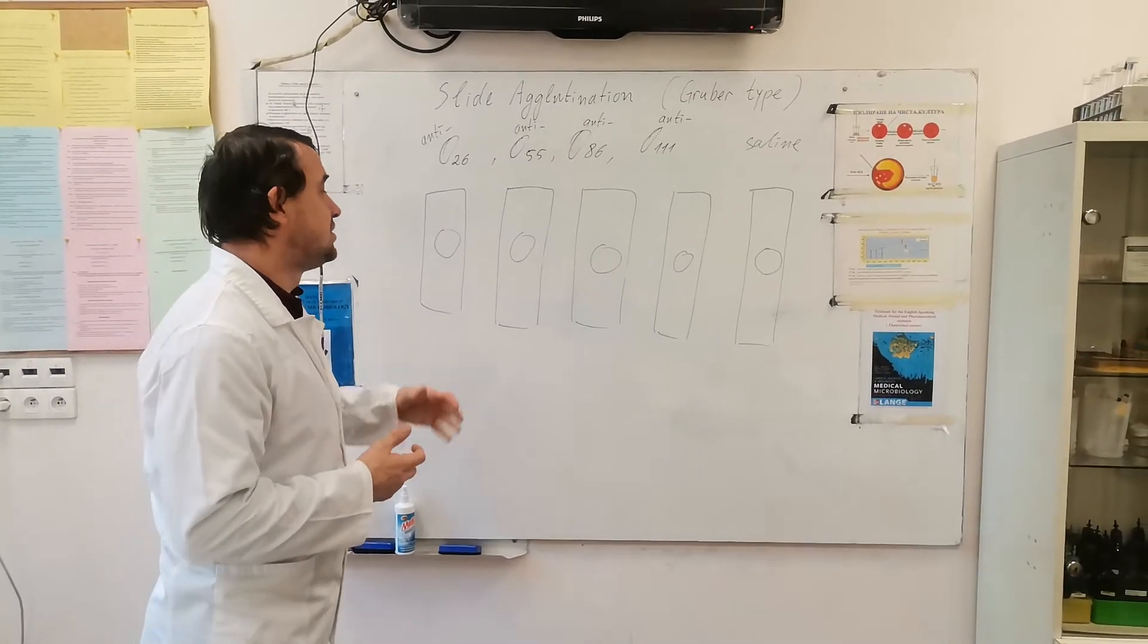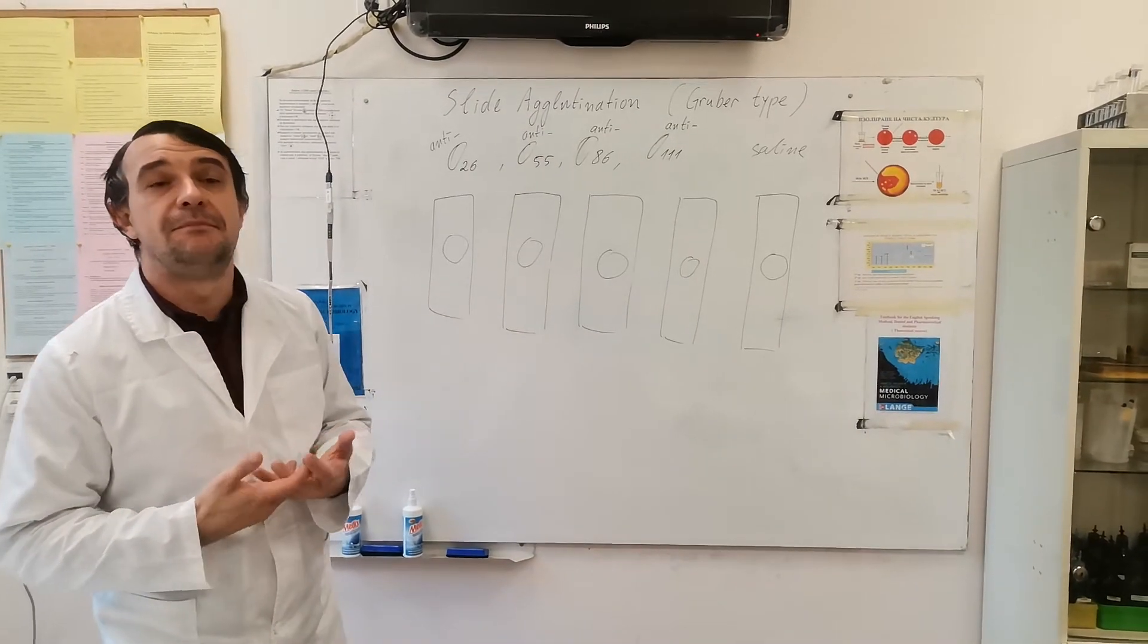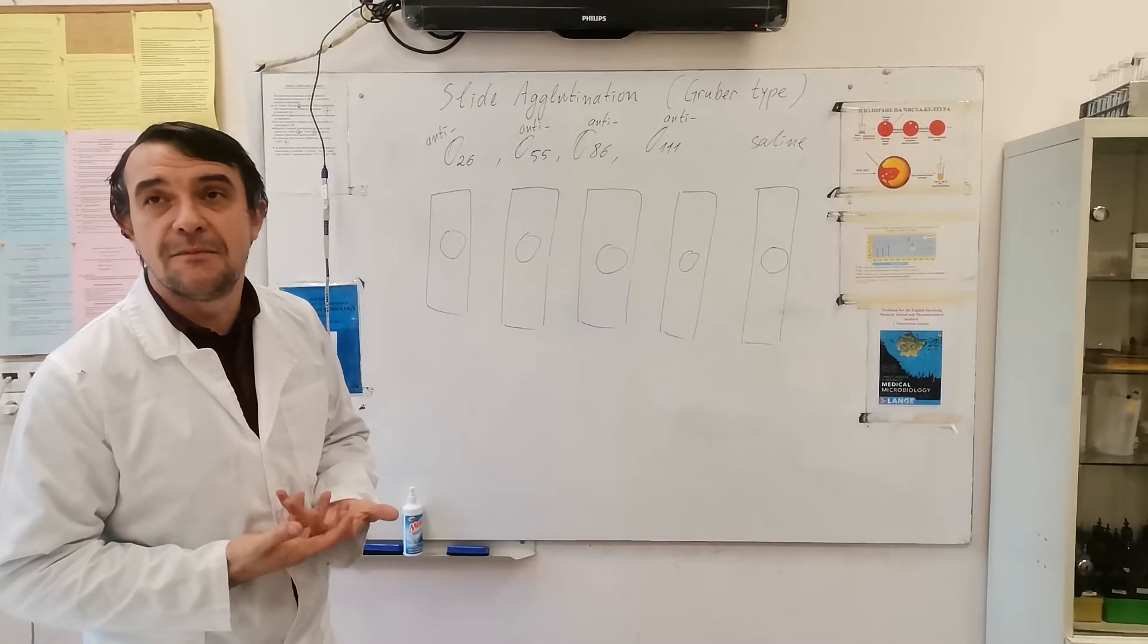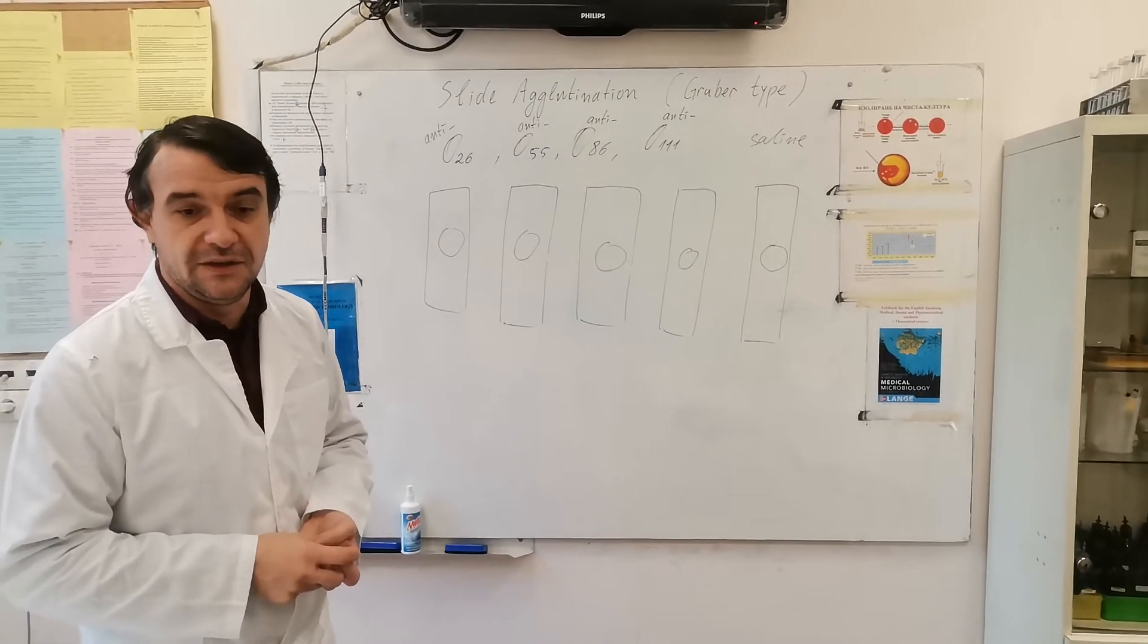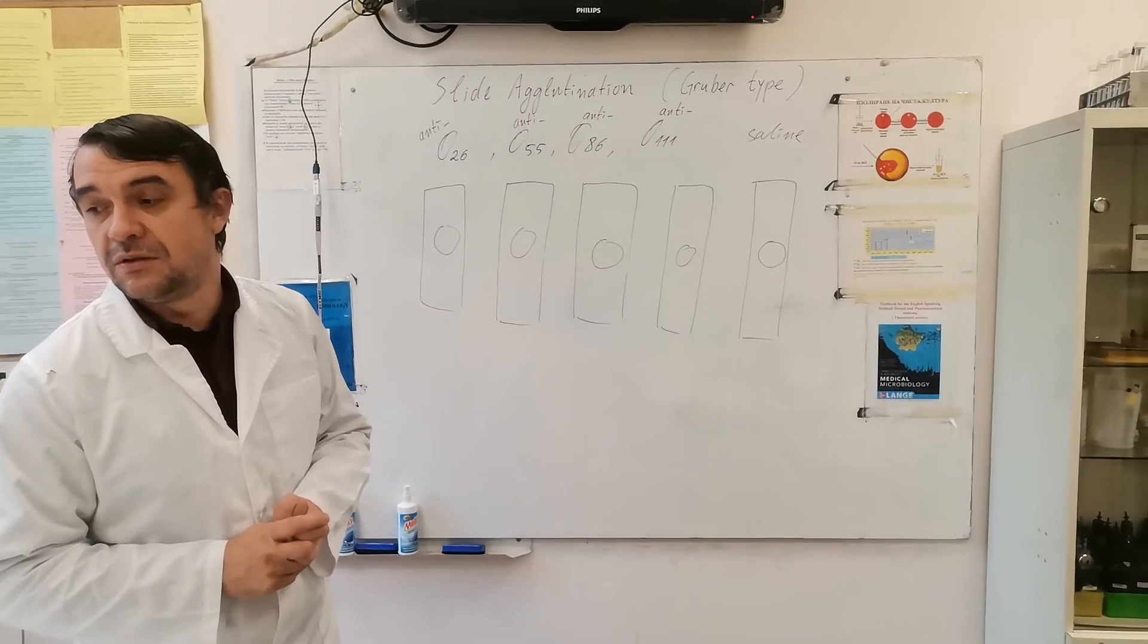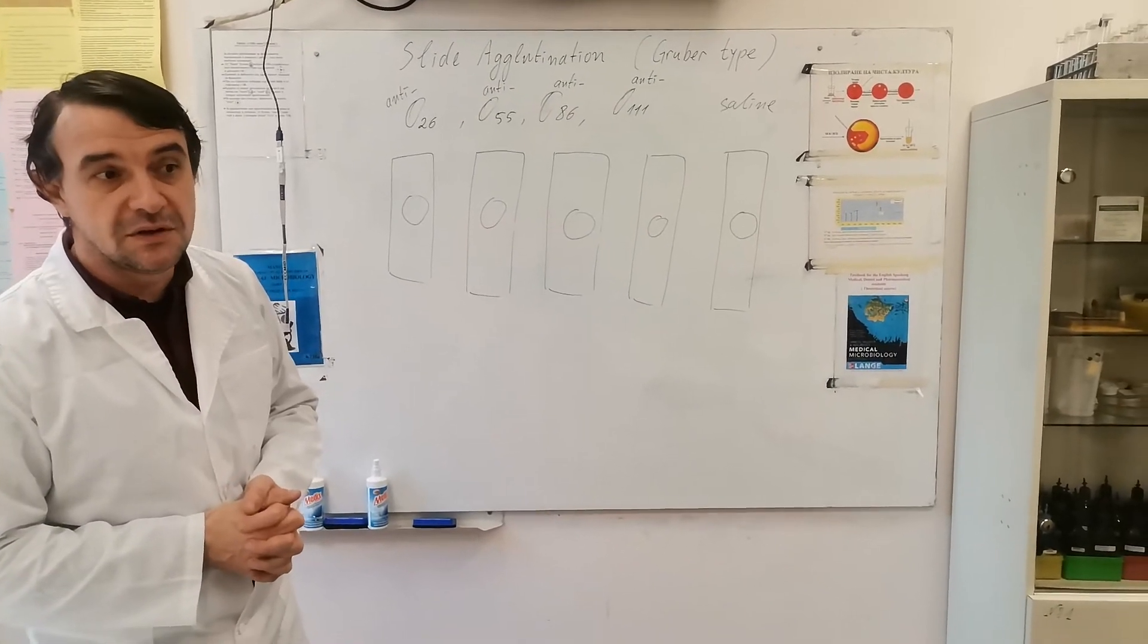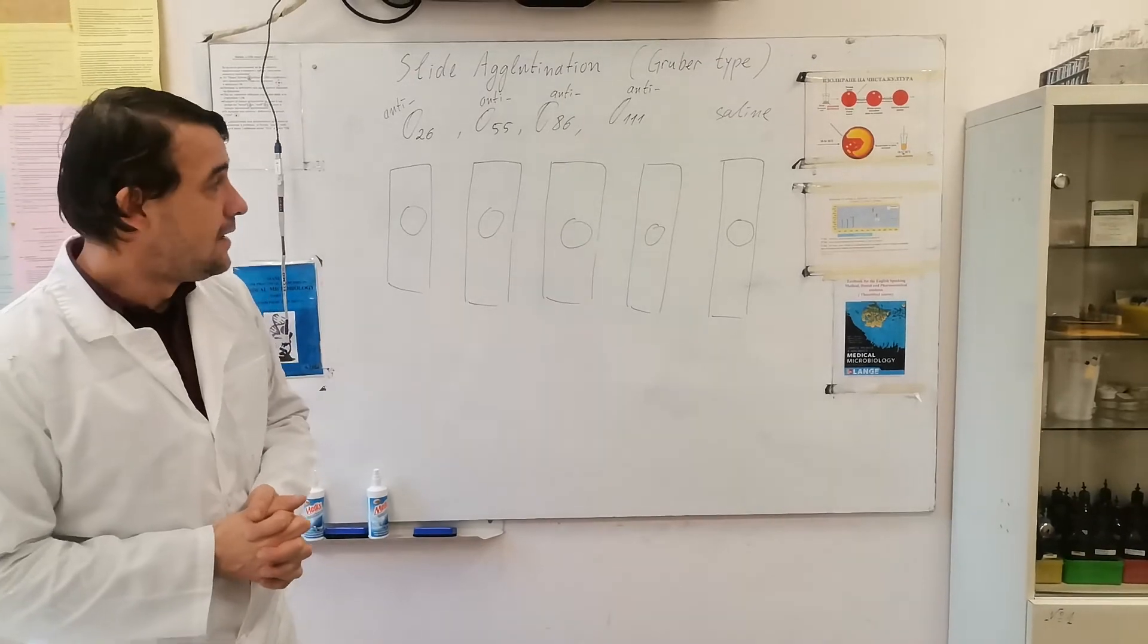This reaction, the formation of the lattice, depends on the presence of electrolytes. So agglutination cannot become visible in distilled water. This is important, so when we use the reagents they should not be in distilled water, they should be in saline.